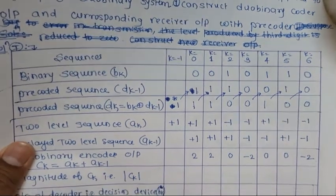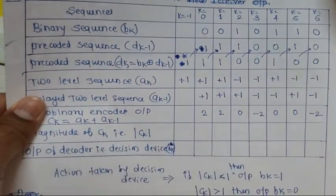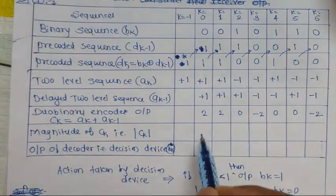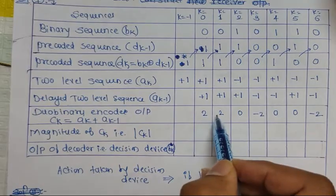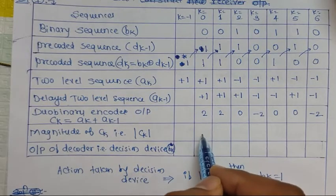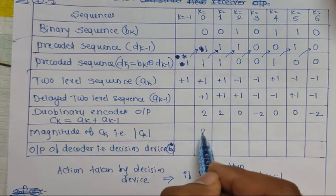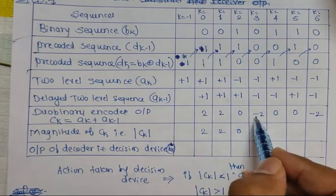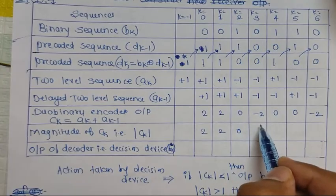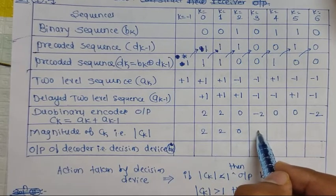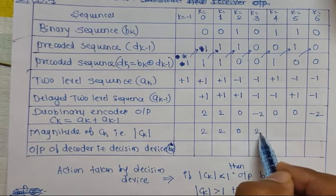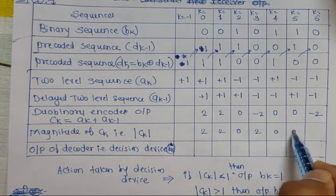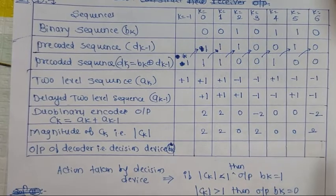Now we write the modulus of ck. The modulus values are: |2| = 2, |2| = 2, |0| = 0, |0| = 0, |-2| = 2, |0| = 0, |0| = 0, |0| = 0, |-2| = 2.